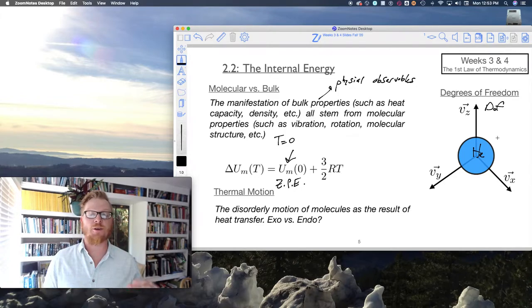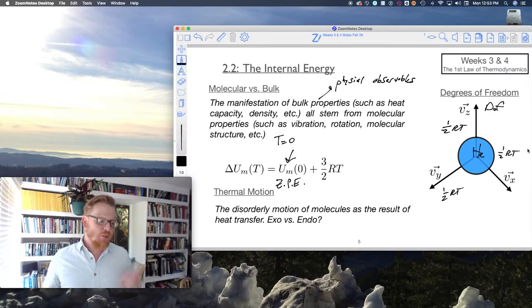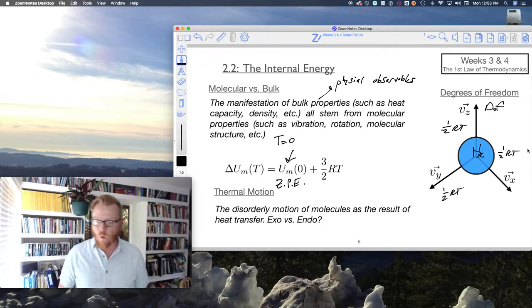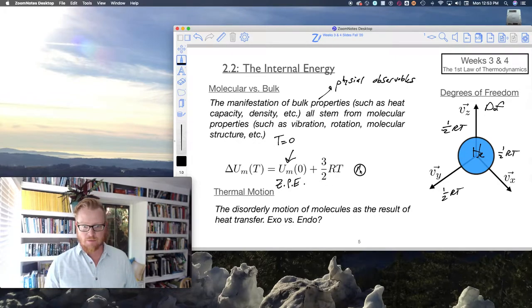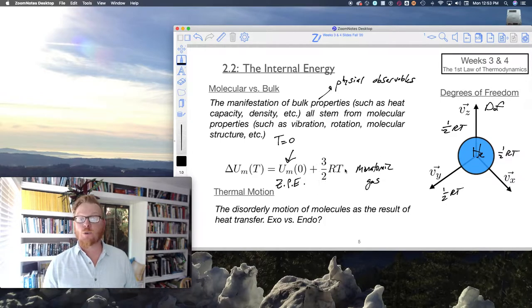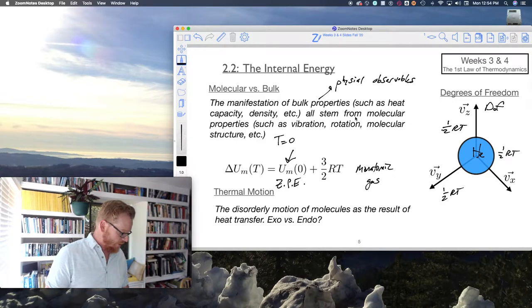Those are the things the molecule can do. And where does this three-half RT come from? Well, recall, for each degree, we get one-half RT or one-half K-Boltzmann-T, depending on if we're talking about a mole or a molecule. So thus, we can say the internal energy of a monatomic gas, or a noble gas if you will, is three-half RT. And, of course, plus some very tiny contribution due to the ZPE, the zero point energy.